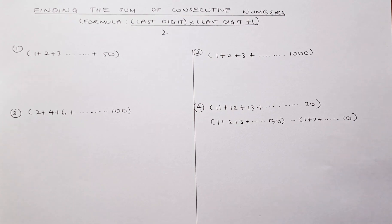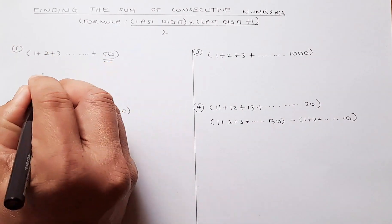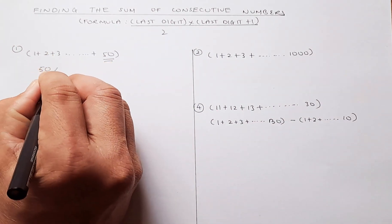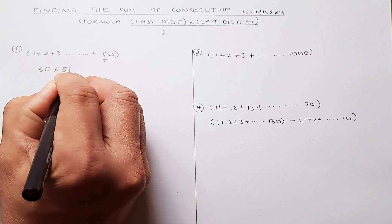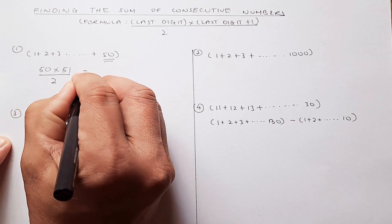So the first example, 1 plus 2 plus 3 all the way up to 50. And how you calculate the sum, you use this formula here. So you just look at the last number, 50. You multiply by the next number, 51, because 50 plus 1 is 51 and you divide by 2. So that will be the sum.